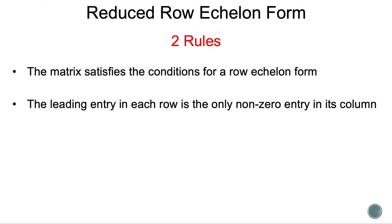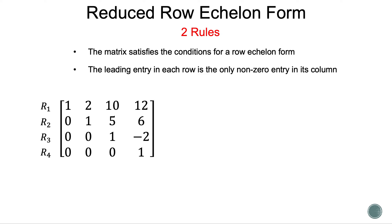Now let's take a look at the rules for reduced row echelon form. Rule 1: the matrix satisfies the conditions for row echelon form. Rule 2: the leading entry in each row is the only non-zero entry in its column. Let's take a look at an example. Our matrix is already in row echelon form, which satisfies Rule 1. We need to work on Rule 2 to transform this matrix into reduced row echelon form — we want our principal diagonal to be full of 1's and the rest to be 0's.